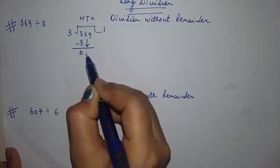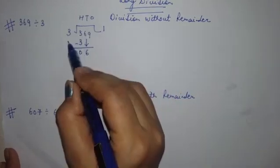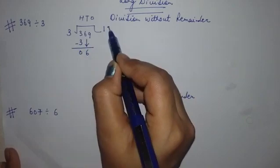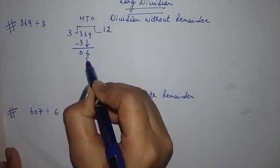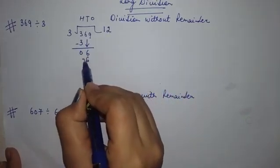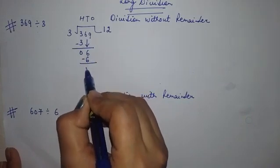Now take 6, write 6 here. 3 threes are 6, write 6 here. Now again subtract these numbers 6 minus 6 is 0.